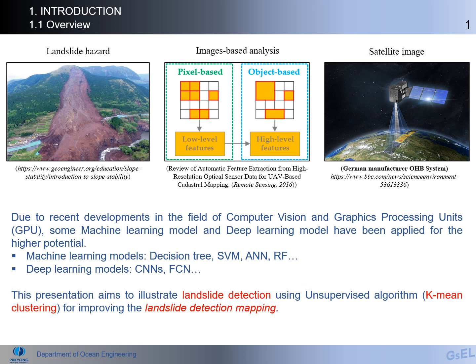We know that landslide is a very dangerous hazard to everybody and the environment. It can destroy everything where a landslide passes through. Until now, there has been much research about landslide detection using image processing and deep learning from satellite imagery data.